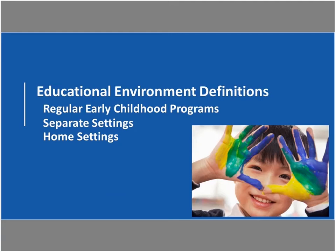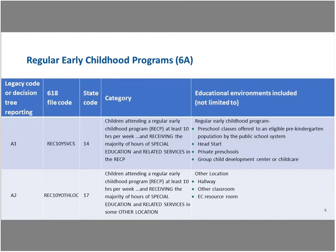Many of you are aware of the definitions of educational environments at the preschool level. However, we are going to take a few minutes to review what they are to help you better understand the data. One of the things that Washington learned from taking a deeper dive of their Indicator 6 data was that there are two distinct things they needed to mediate at the district level: the student information system and the IEP vendor. The state code became really important so that districts understand what was meant for each of those reporting categories. In this table, we are using both the 618 file code as well as the legacy code or decision tree reporting code.